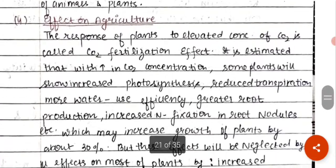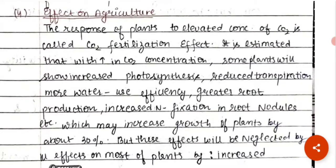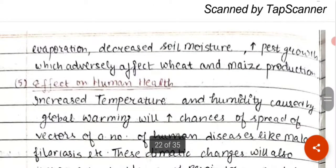Global warming also affects agriculture. The response of plants to elevated CO2 concentration is called the CO2 fertilization effect. With high CO2 concentration, some plants will show increased photosynthesis, reduced transpiration, better water use efficiency, greater root production, and increased nitrogen fixation. However, these positive effects will be outweighed because global warming will decrease soil moisture, increase pest growth, and cause various plant diseases.